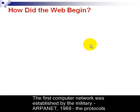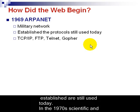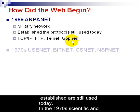Let's take a look at how the Web began. In 1969, the government established a military network that was known as ARPANET. The protocols that were developed during this time are the protocols that we still use today. Most notably, TCP/IP, which allows for communication, and FTP, or File Transfer Protocol, and some other protocols that have pretty much been outdated at this time.